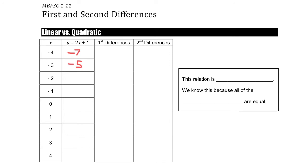Pause the video and try it. So these are the rest of the values. Now, what am I talking about with first differences? One way you can think about first differences is that it's the difference between your successive y values — as I move from one value down to the next, am I increasing or decreasing, and by how much?